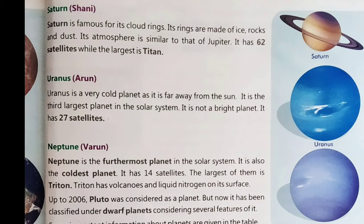Uranus is a very cold planet as it is far away from the sun. It is the third largest planet in the solar system. It is not a bright planet and has 27 satellites. Neptune is the furthermost planet in the solar system. It is also the coldest planet and has 14 satellites. The largest of them is Triton.